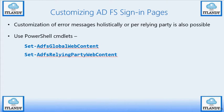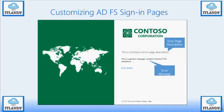You can customize the primary page using PowerShell — this covers global content and the relying party itself. One important thing: you can also change the error page description — the actual text of it. You can change the error page per relying party and put in generic messages, something like: 'For issues, contact IT support.'